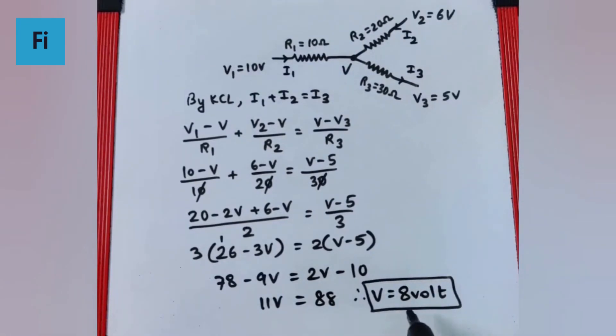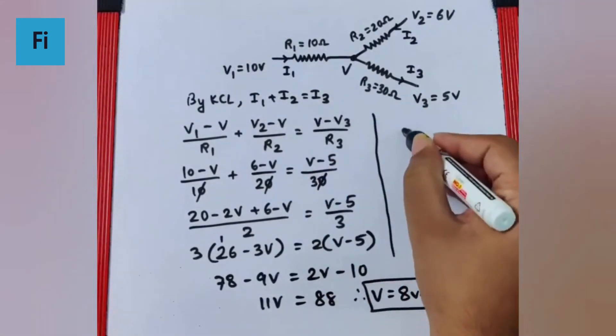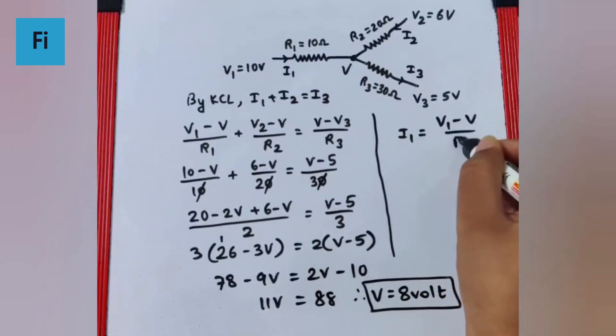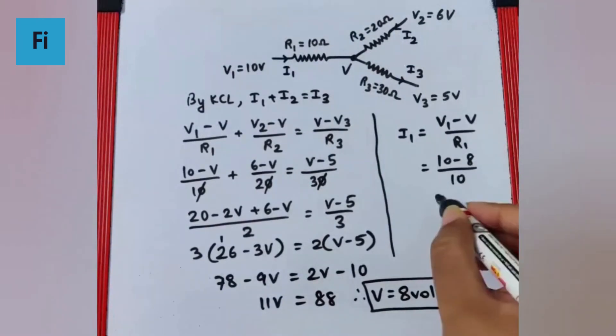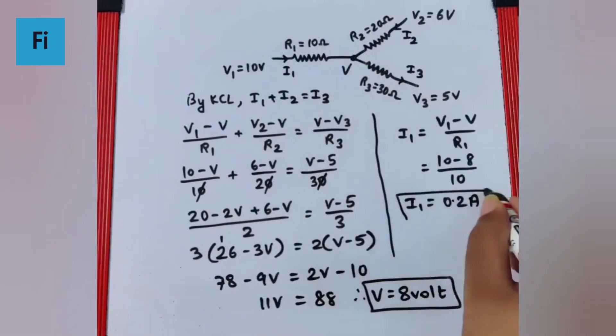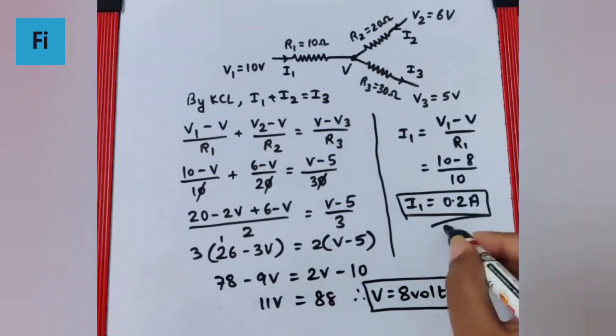Now once we have the value of V, it's very easy to get the value of I1, which is V1 minus V by R1. That's 10 minus 8 upon 10, which equals 2 by 10, or 0.2 amperes. So the current flowing through R1 is 0.2 amperes, and this is our final answer.